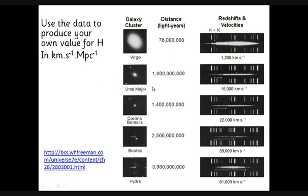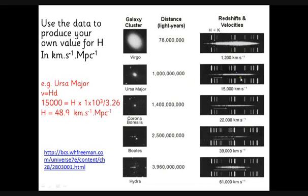Here's an example for Ursa Major. It's a billion light years away, moving at 15,000 kilometers per second. Divide that by 3.26 to turn it into parsecs. It's about 300 megaparsecs away. Using the equation, that gives us a value of 48.9 kilometers per second per megaparsec. If you do this for all of these, you get about the same value, though this is a bit low from this data.